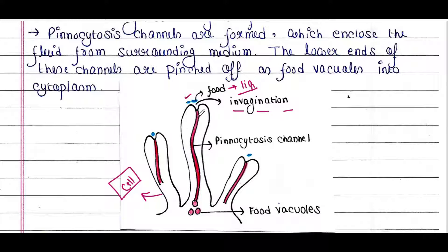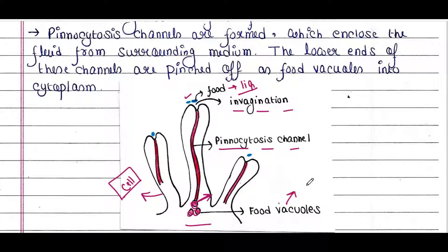The food comes through a channel that forms — called the pinocytosis channel. This channel encloses the fluid from the surrounding media, and the lower ends of these channels are pinched off as food vacuoles into the cytoplasm. Then digestion occurs just like the previous case, with acidic content and enzymes in the vacuoles, so the downstream process is the same.